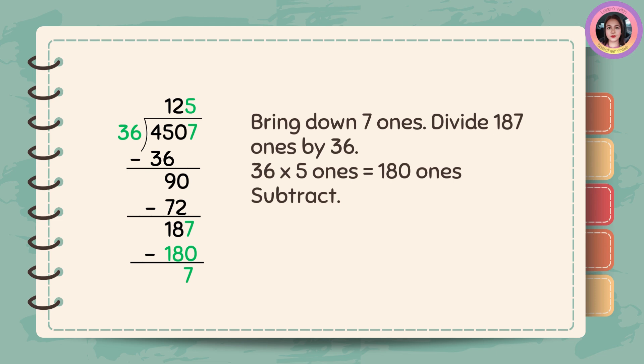Bring down 7 ones. Divide 187 ones by 36. 36 times 5 ones is 180 ones. And then subtract. 187 minus 180 is 7.